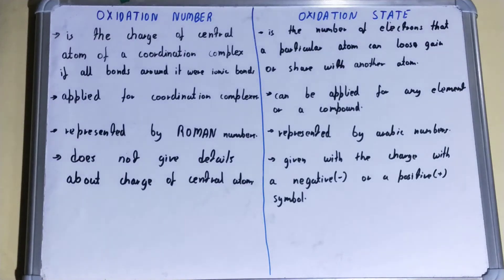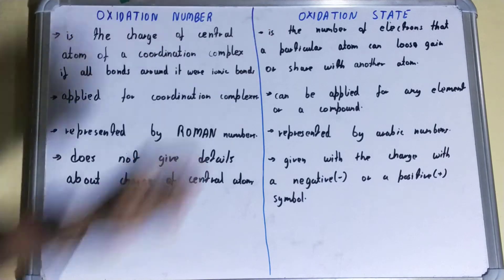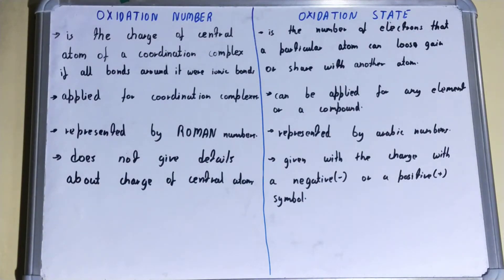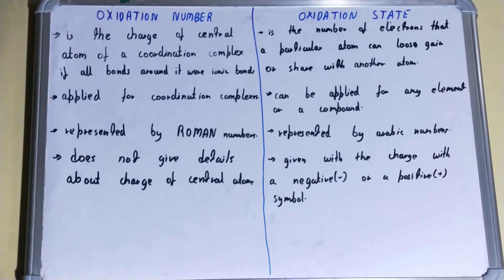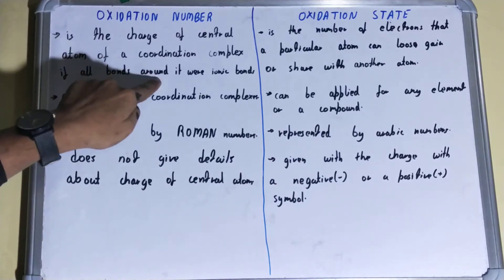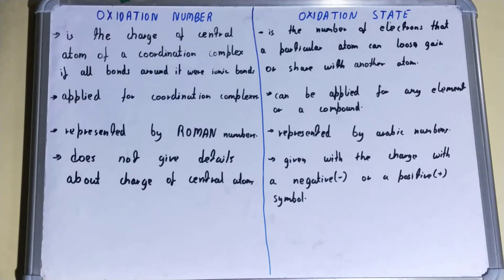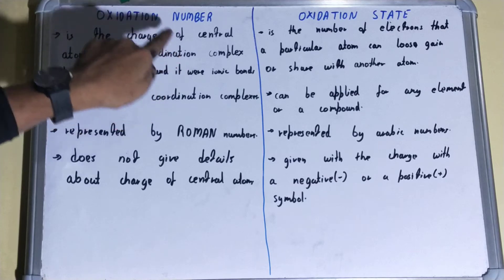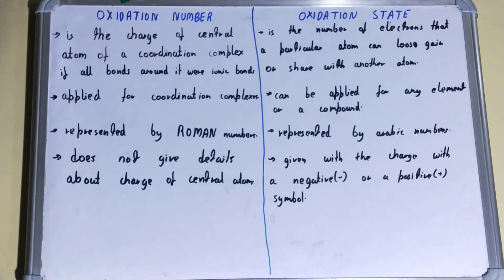Hello friends, in this video I'll be explaining the difference between oxidation number and oxidation state. So let's start. If we talk about the oxidation number, it is the charge of the central atom of a coordination complex, if all bonds around it were ionic bonds. So if the surrounding bonds are ionic bonds and it is a coordination complex, then oxidation number tells us about the charge of the central atom.